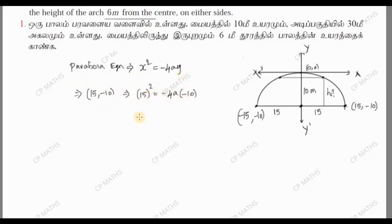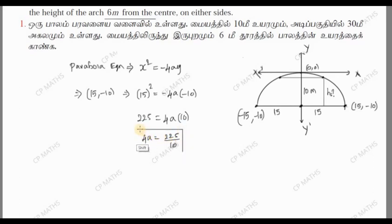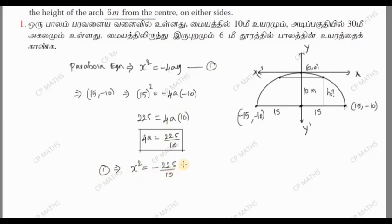So 15 squared = -4a × y. The y value is -10. So 15² = 225, and we substitute: 4a × 10 = 225, giving us 4a = 225/10. We will now use this 4a value to replace it back into the parabola equation. The general equation is x² = -4ay, substituting our 4a value.